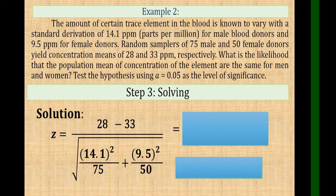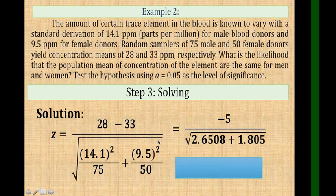Put it in the formula. You can type it directly to your calculator or solve it manually on your cell phone little by little. You can start here, add this, get the square root. After that, subtract the two means and divide your answer by the denominator. You will get negative 2.37.